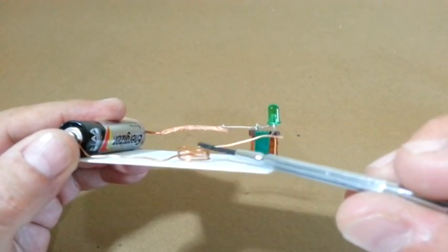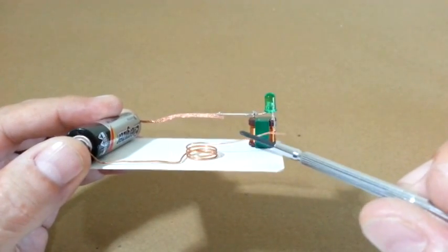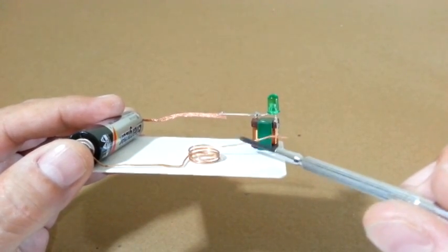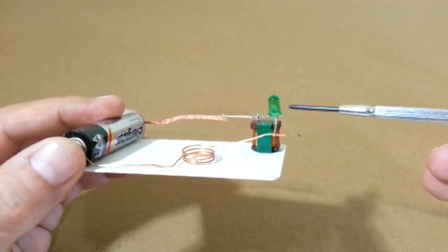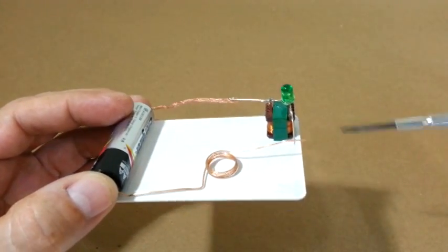When it moves, the contact here can make the circuit connected and disconnected. Every time this happens, the LED lights up because of the voltage amplification of the inductor.